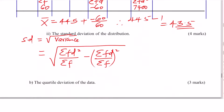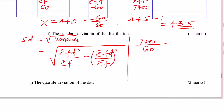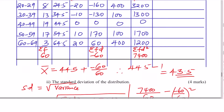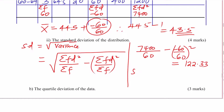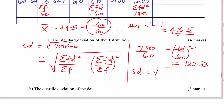Now we can put everything into the formula. Standard deviation equals the square root of: (summation of FD² divided by summation of F) minus (summation of FD divided by summation of F) squared. That is: 7400 divided by 60, subtract (negative 60 divided by 60) squared. This gives a variance of 122.33. The standard deviation is the square root of 122.33, which gives 11.06.